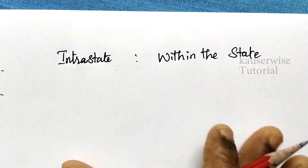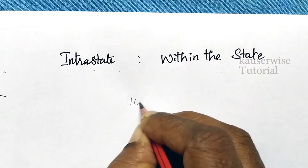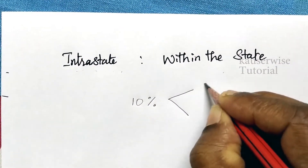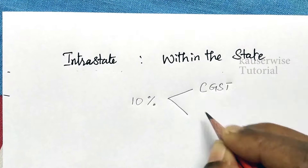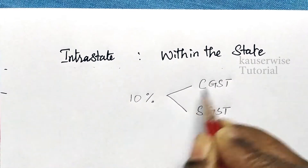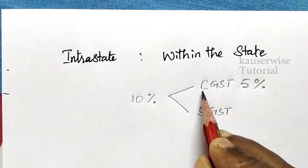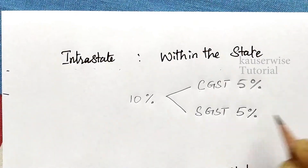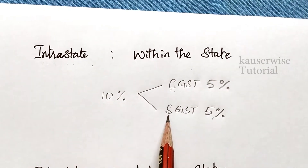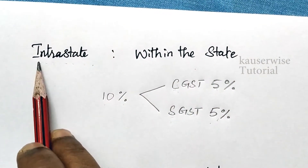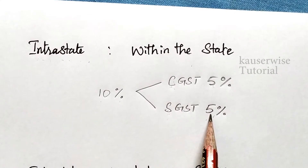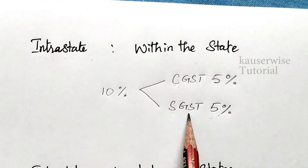In the case of intrastate, assume 10% is the GST. This 10% will be split into two equal categories: Central Goods and Service Tax and State Goods and Service Tax. So 5% is payable to the central government and the remaining 5% is payable to the state government. The entire GST is shared equally by both governments. The buyer pays 5% to the central government and 5% to the state government.